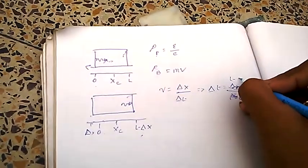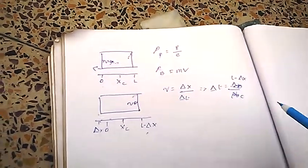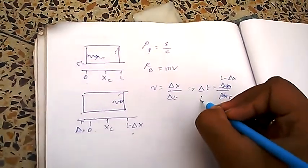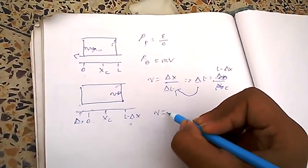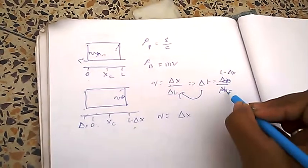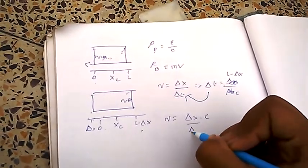And the distance is L minus delta x. So, we will write here is the formula of T. So, we will place it here. So, velocity equals to delta x into C by delta t.